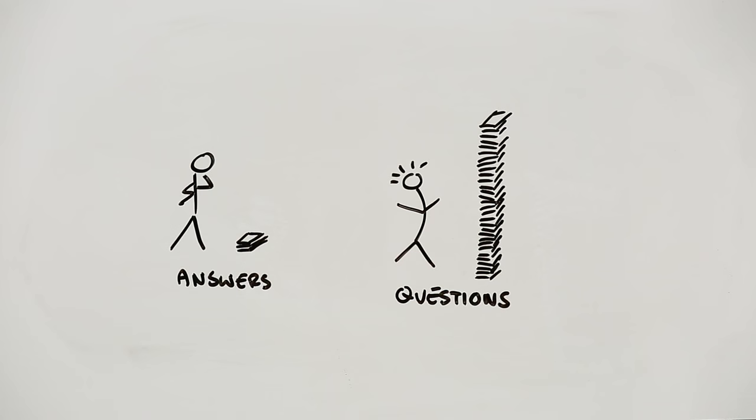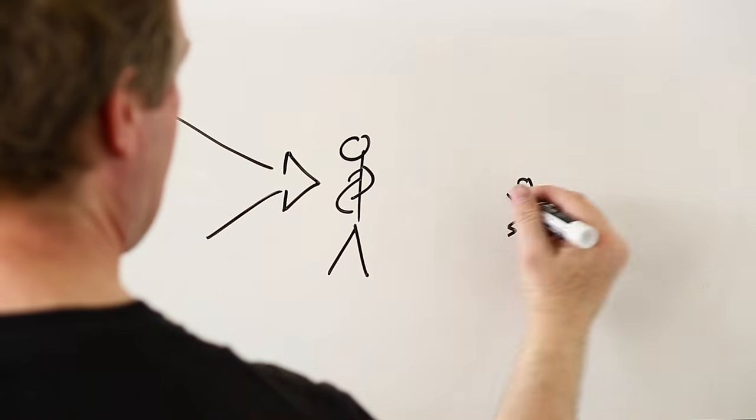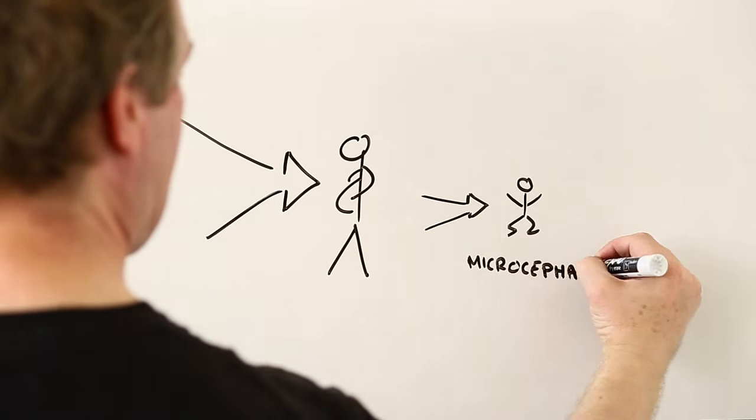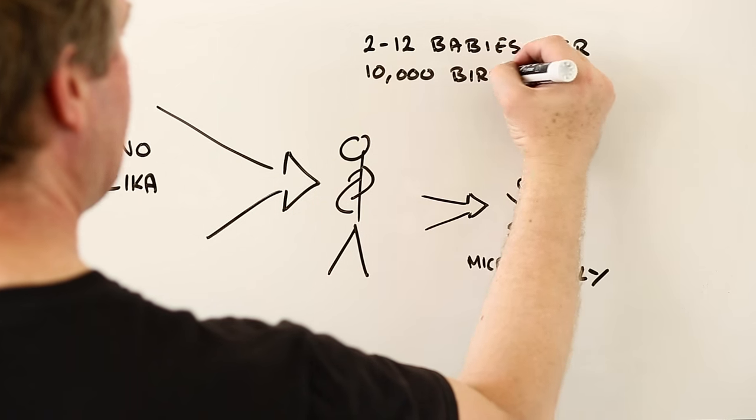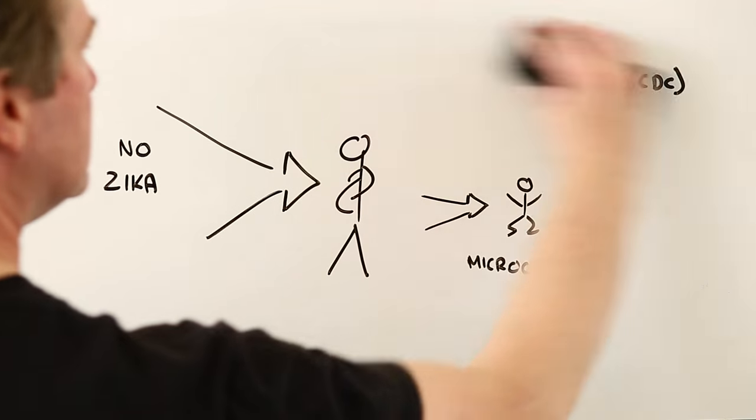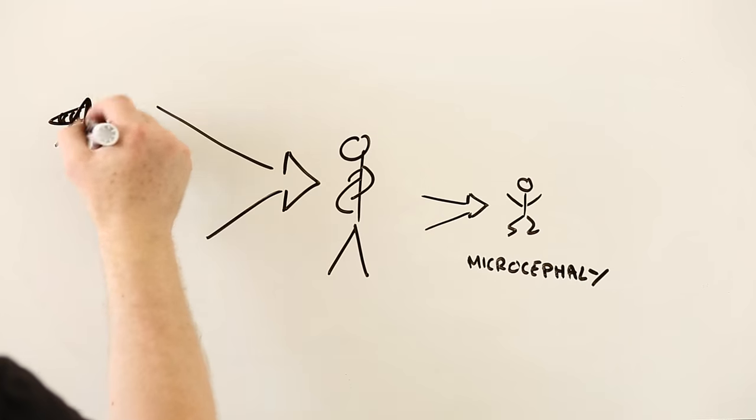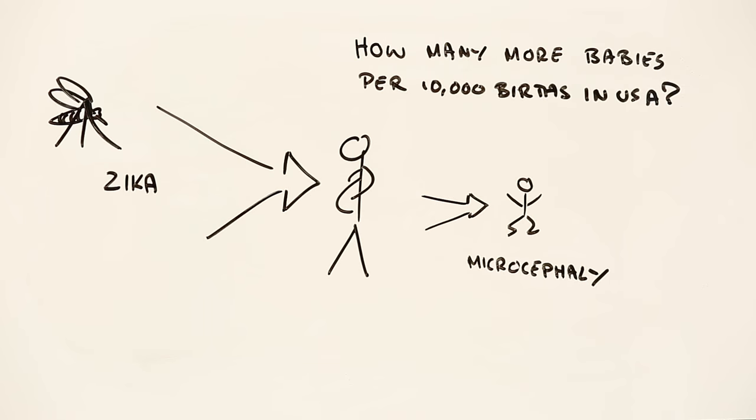Of course, Zika isn't the only cause of microcephaly. Even without Zika, for every 5,000 babies born in the US, for example, there's a good chance that one will have the condition. And there are indications that the pre-Zika numbers are even higher in Brazil. What we don't yet know is how much higher the chances of having a child with microcephaly might get as Zika spreads.